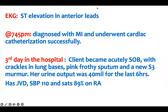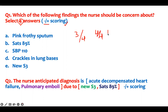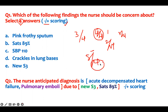Which of the following findings should the nurse be concerned about? Select four — and this is plus/minus manual scoring. That means if you pick the wrong answer, one point will be deducted. If you select three correct out of four, you get three out of four. If you select four and get one wrong, you still get three out of four. If you select five and one is wrong, the wrong answer is deducted, leaving you three.